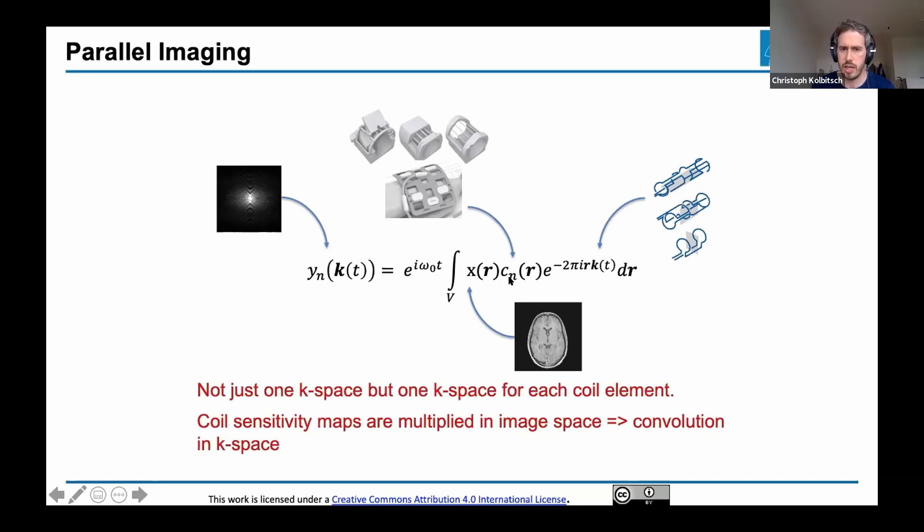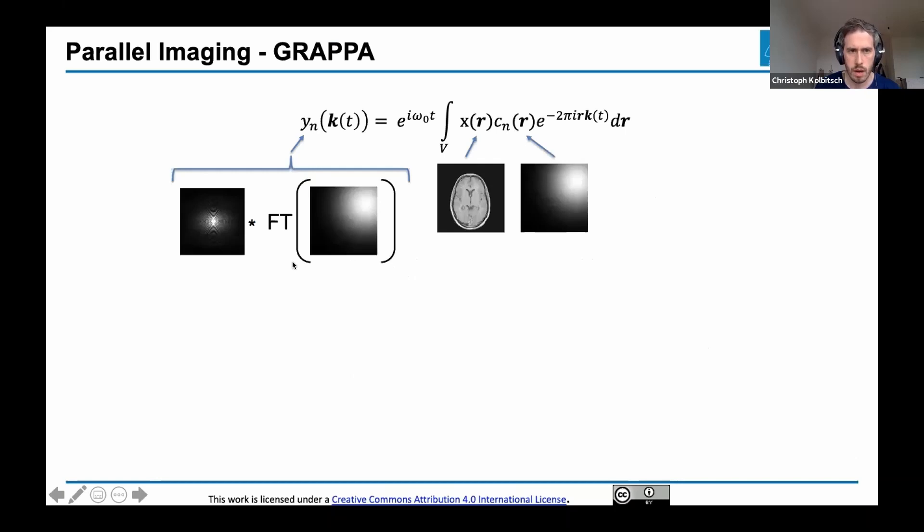The second thing is that this is a Fourier transform. A multiplication in image space is nothing else as a convolution in Fourier space. In this case, it's a convolution with the Fourier transform of the coil maps in our k-space. Based on these things, one reconstruction approach was developed called GRAPPA. It falls under parallel imaging, where parallel means multiple parallel receiver coils utilized for reducing undersampling artifacts. GRAPPA is one, there's SENSE, SMASH, a whole list of approaches.